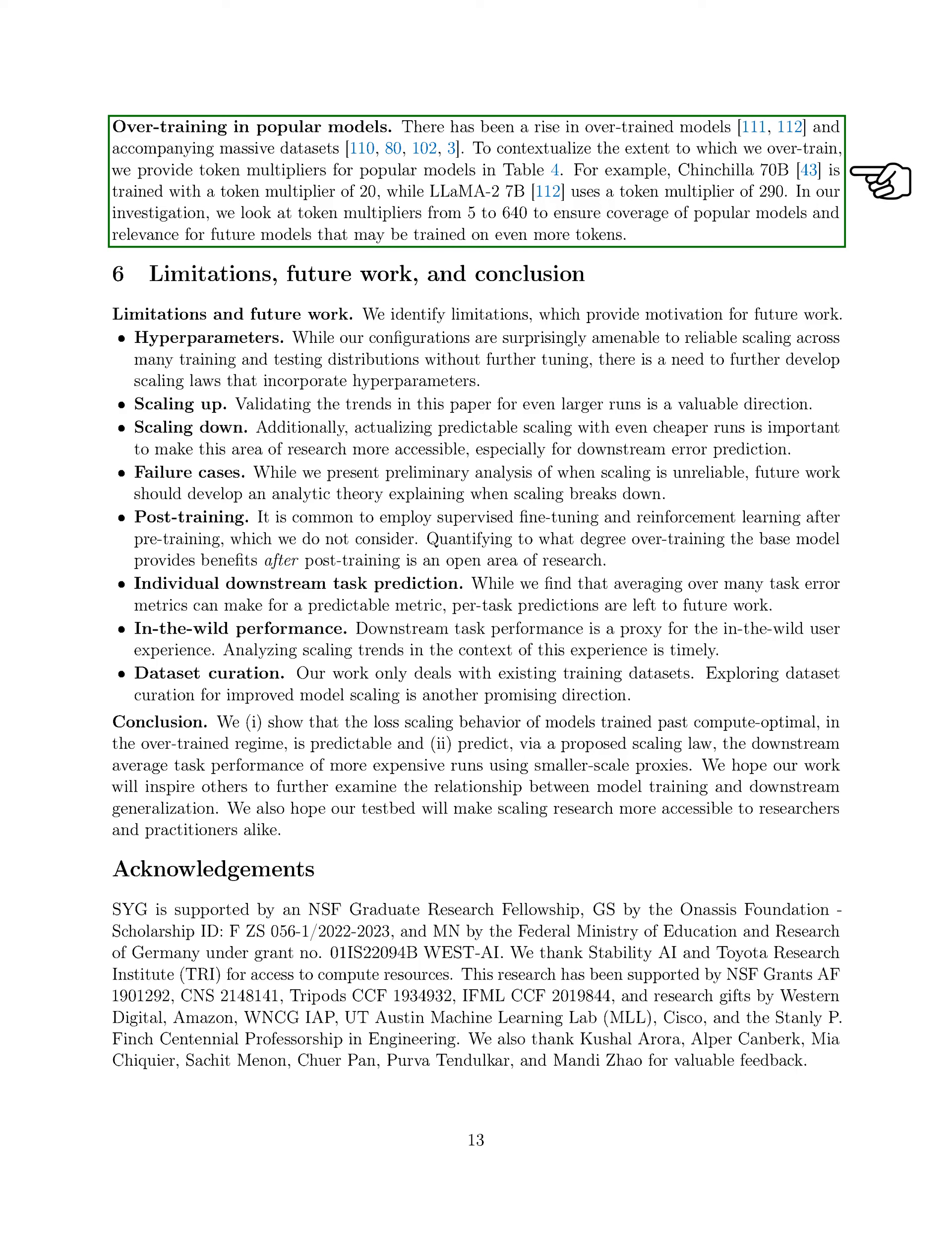We also discuss the rise of over-trained models and massive datasets. We provide token multipliers for popular models to understand the extent of over-training. For instance, Chinchilla 70B uses a token multiplier of 20, while Llama 2 7B uses 290. We explore token multipliers from 5 to 640 to cover popular models and future relevance.